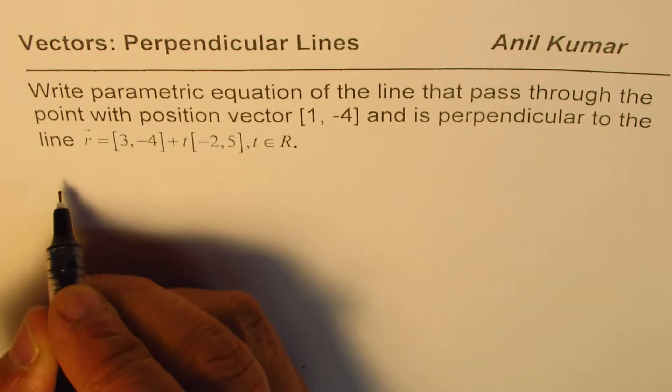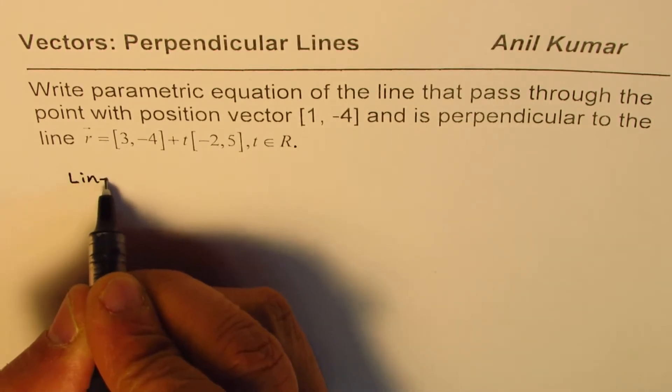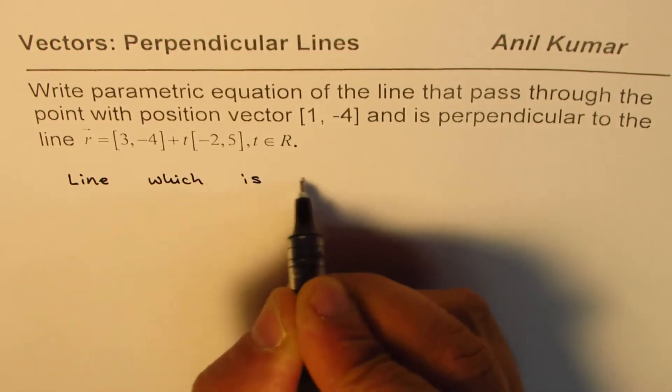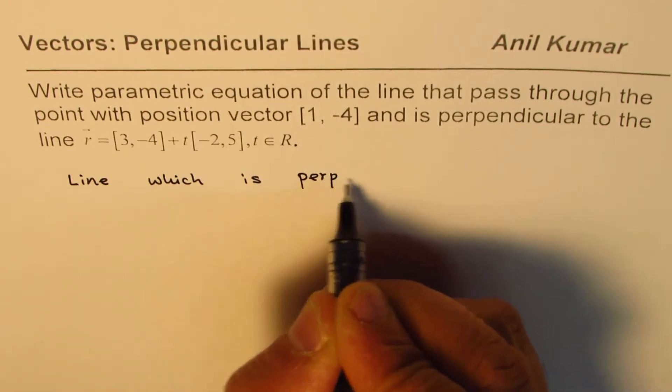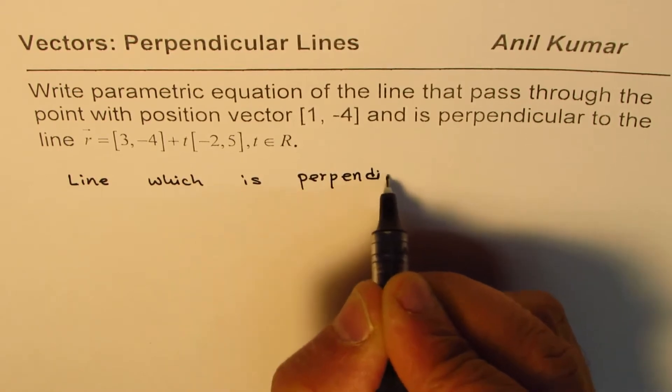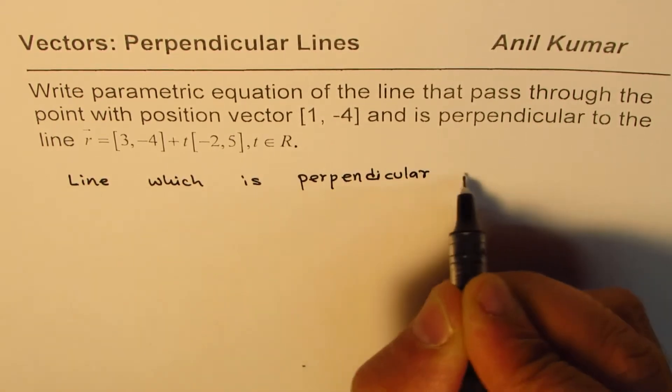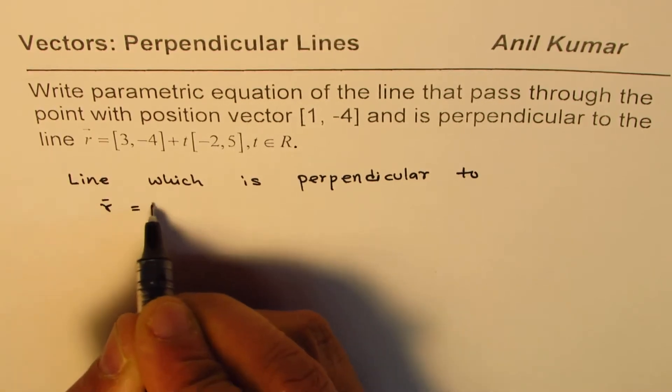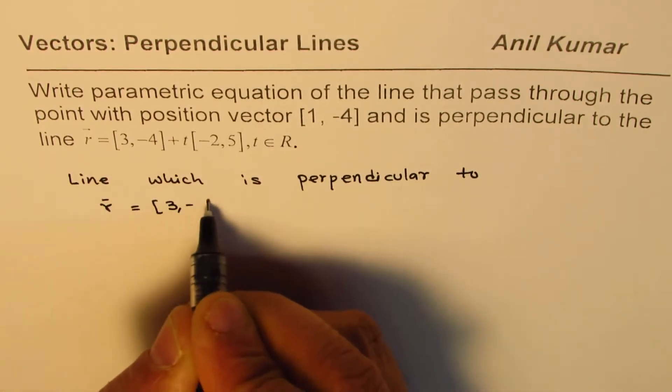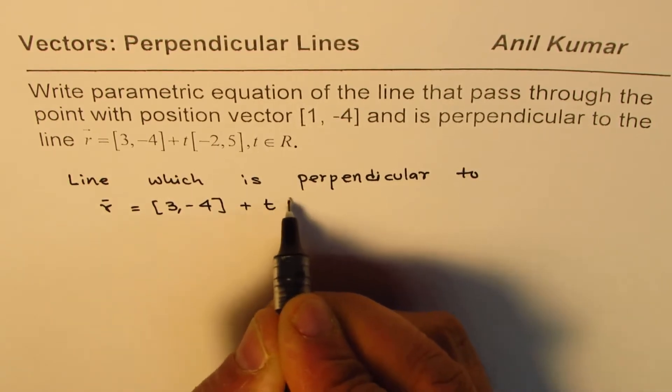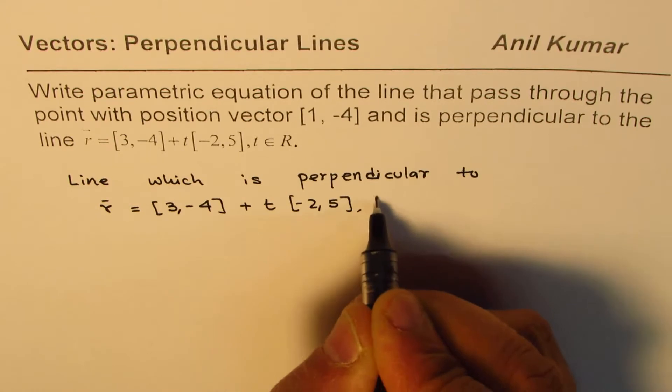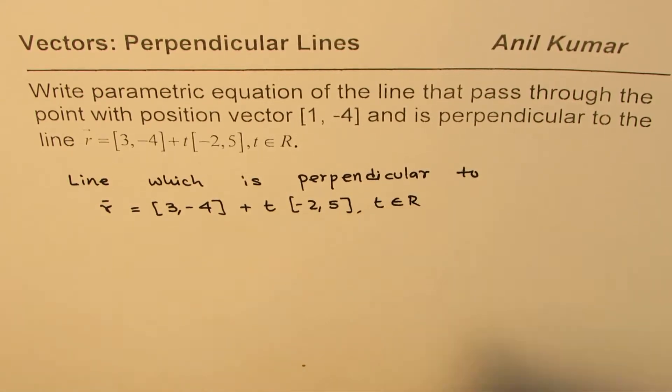So we will need to write line which is perpendicular to the given line which is r = [3, -4] + t[-2, 5], where t belongs to real numbers.